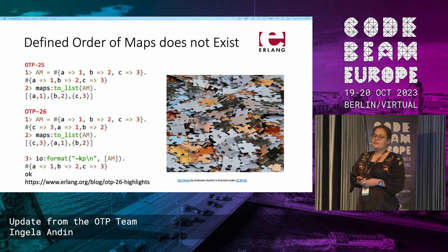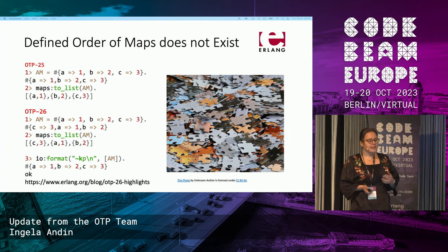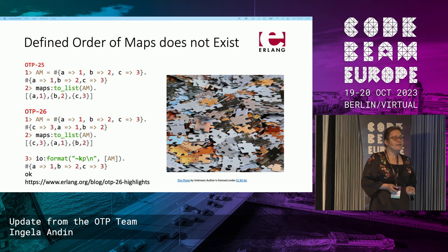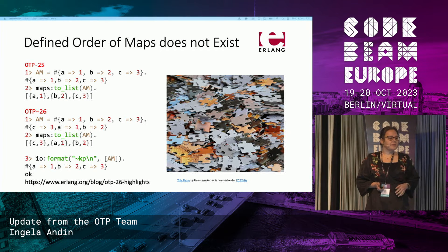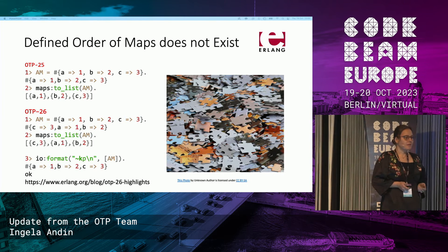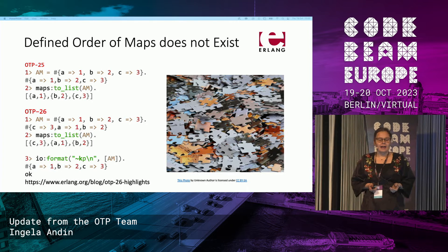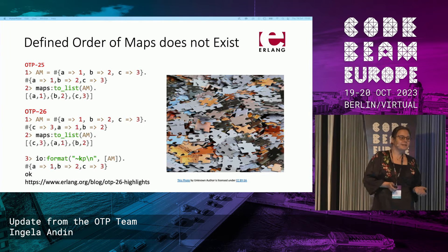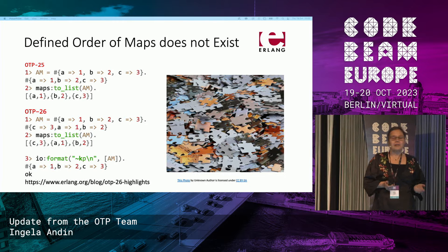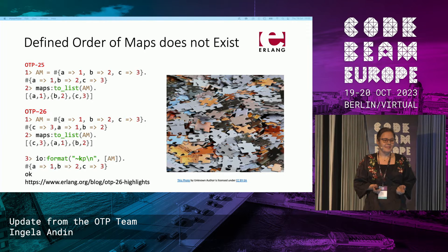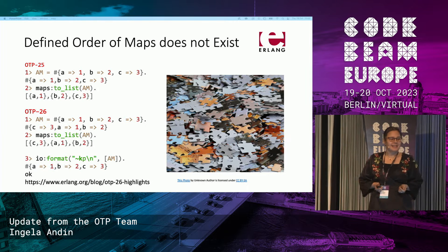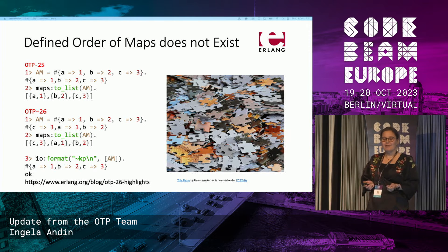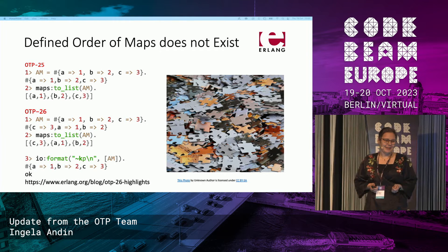Maps are collections of keys and values and have never had a defined order. But due to some implementation details of small maps, you would get an order when you converted the map to a list or printed it that many users fancied. And when the implementation changed in OTP 26, these users were a bit disappointed and maybe surprised.